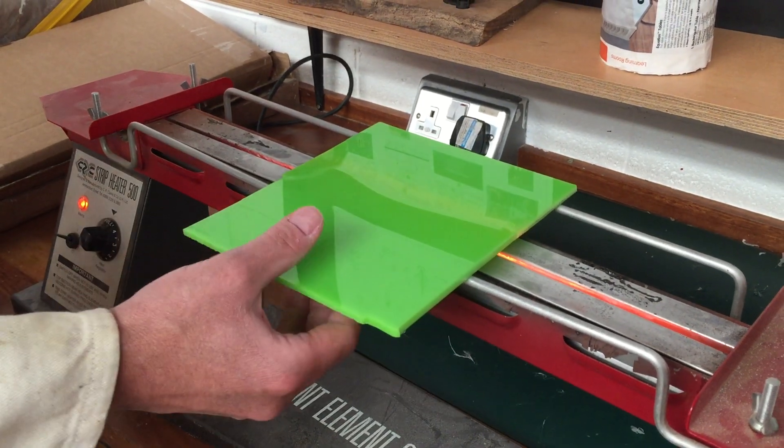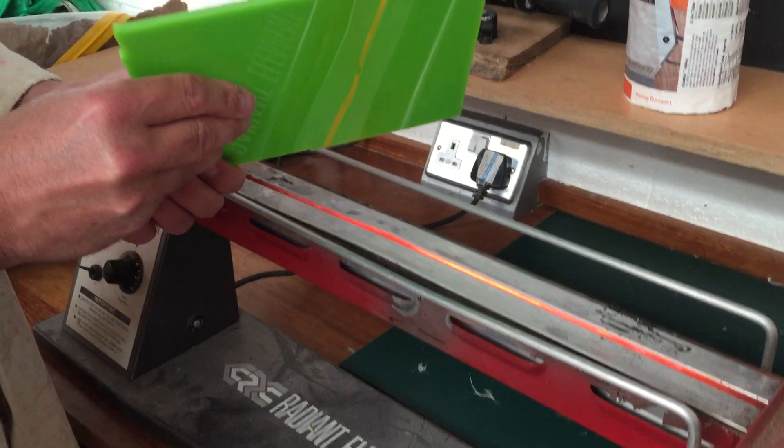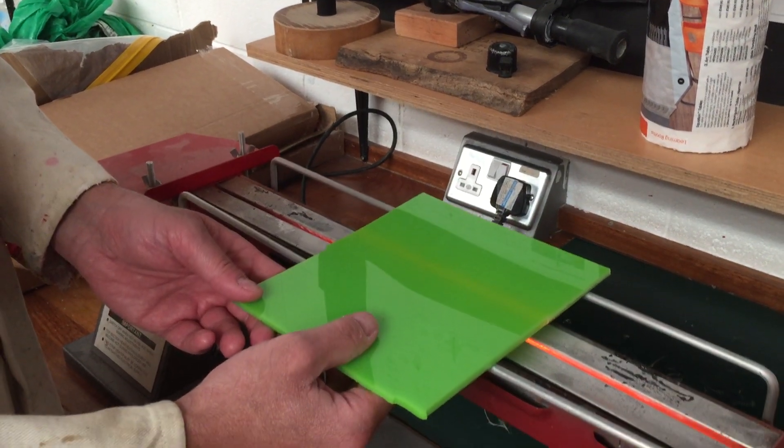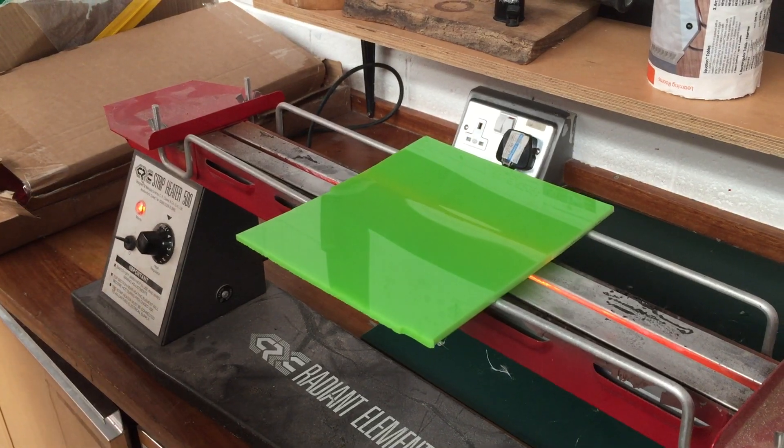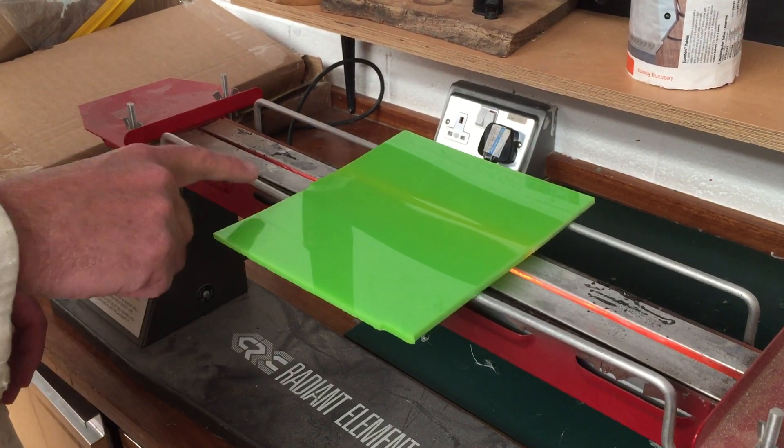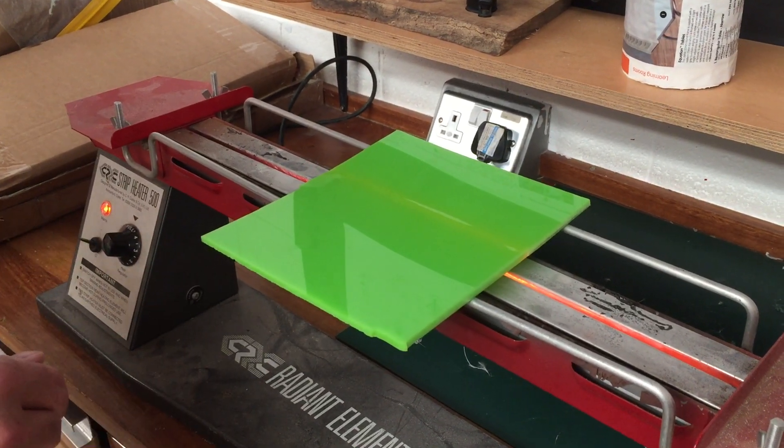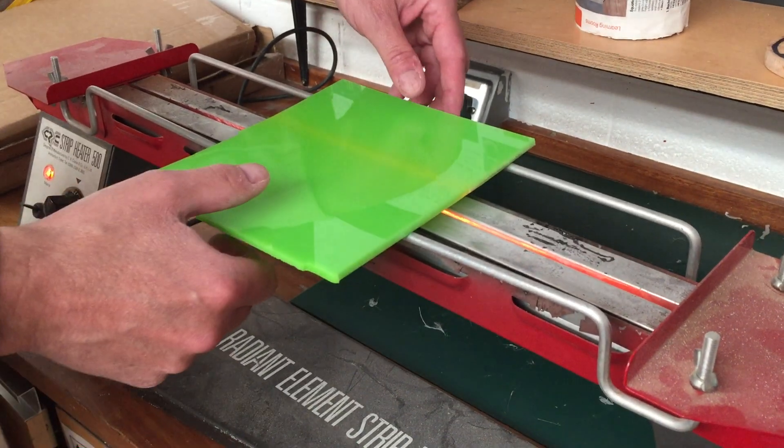Okay, so the thicker the acrylic or the thicker the polymer, the longer this process will take. This is about five millimeters thick, the stuff that we're using for this project, and it's going to take a couple of minutes. If it was a lot thinner, it would already be ready by now, so it'd be a lot quicker. That's just the material property.